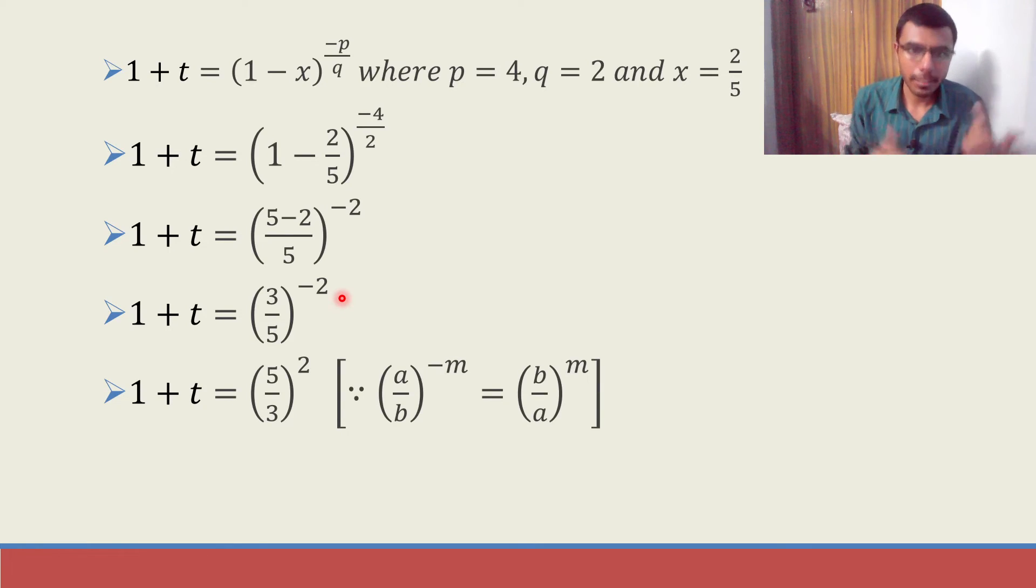Now (a/b)^(-m) is nothing but (b/a)^m. So here I get this (3/5)^(-2) is nothing but (5/3)².